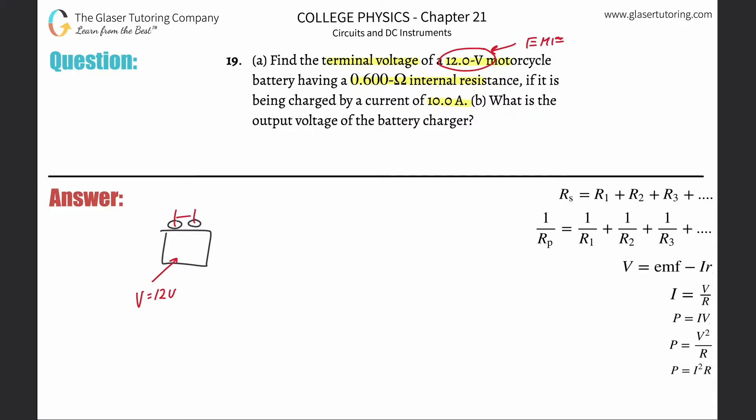So what we realize now is if I want to find the terminal voltage here, I know the battery emf is 12 volts. I also know the internal resistance—R internal is going to be equal to 0.6 ohms. I also know the current that's passing through the terminals and inside the battery is 10 amps.